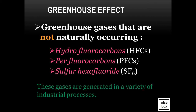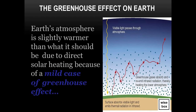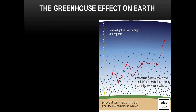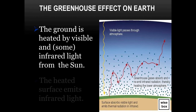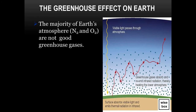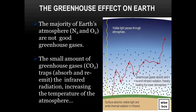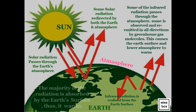These gases are generated in a variety of industrial processes. Earth's atmosphere is slightly warmer than what it should be due to direct solar heating, because of a mild case of greenhouse effect. The ground is heated by visible and some infrared light from the Sun, and then the heated surface emits infrared light. The majority of Earth's atmosphere — N2 and O2 — are not good greenhouse gases. However, the small amount of greenhouse gas such as CO2 traps, absorbs, and re-emits the infrared radiation, increasing the temperature of the atmosphere. The majority of the radiation is absorbed by the Earth's surface, thus it warms.